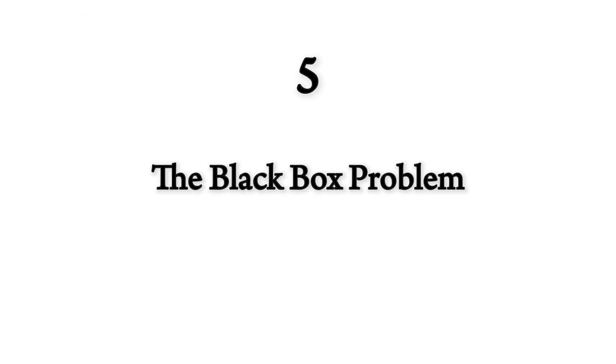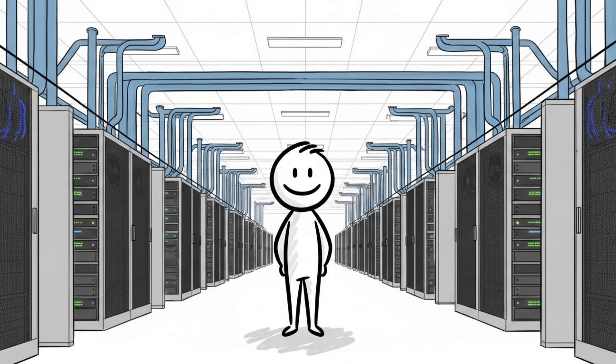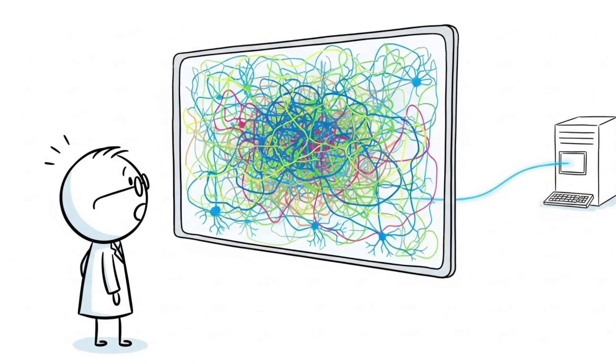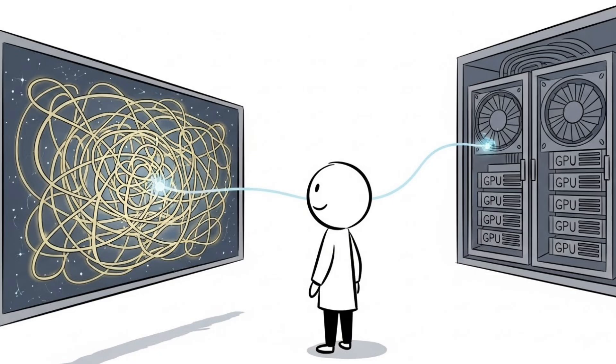5. The Black Box Problem. We are spending billions of dollars to build the most intelligent systems in history. It can write code, diagnose diseases, create art, analyze complex problems, and make decisions. But we have no idea how they work and came to those results.